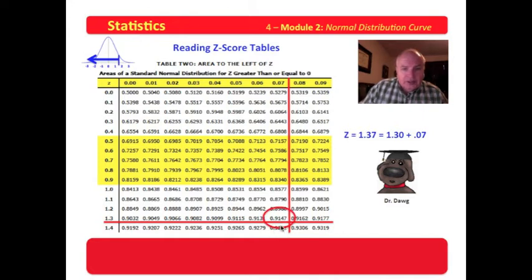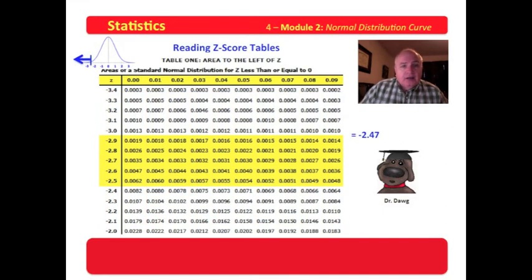Look at this. The z-score for the area to the left of a z of 1.37 is 0.9147. Or actually, we could say 91.47% of the area lies to the left of a z-score equal to 1.37. Let's try another z-score in just a minute.